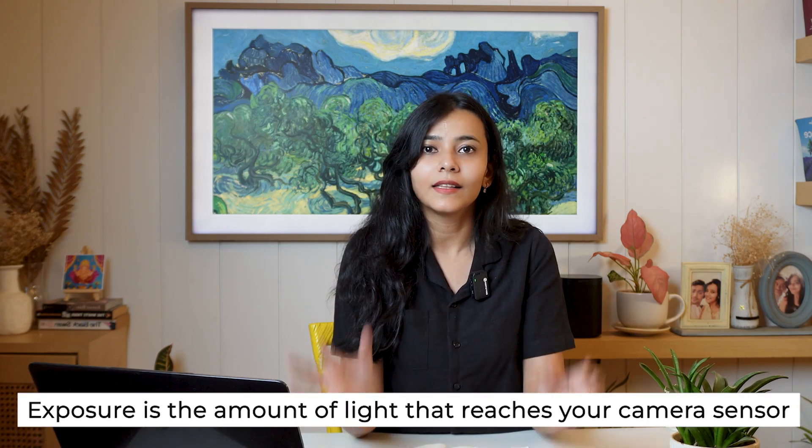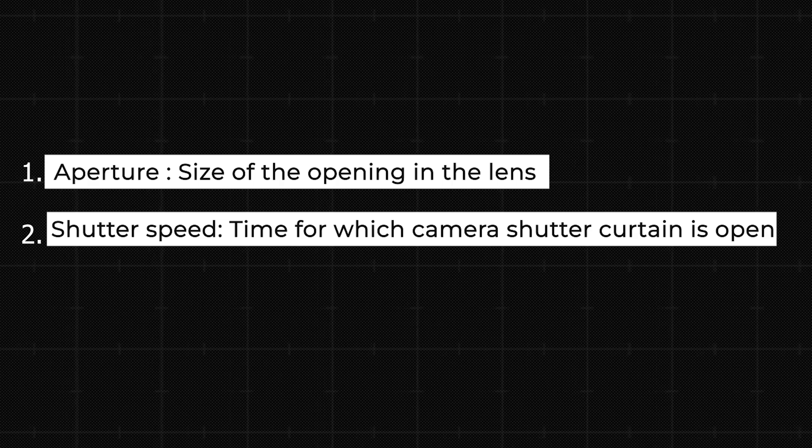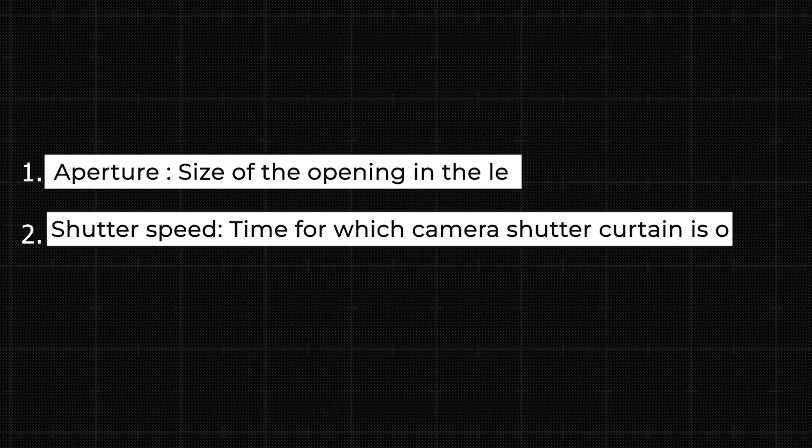Exposure is basically the amount of light that falls on the sensor, and it depends on two factors: the size of the opening, which is aperture, and the time for which the shutter curtains remain open, which is shutter speed. But both of these factors have their limitations. A lens can only have a certain maximum aperture size, beyond which it is physically incapable of letting in more light. On the other hand, we cannot make the shutter speed too slow, because then we will end up with shaky and blurry photographs, which are going to be unusable.